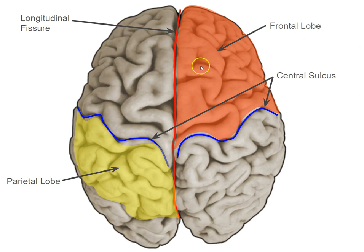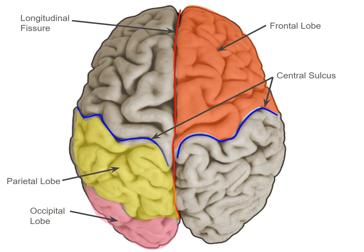So the left frontal lobe is here, right frontal lobe here, left parietal, right parietal. And then finally there's the occipital lobe in the back. That's it for the lobes that you can see from the dorsal view.